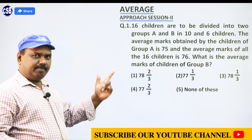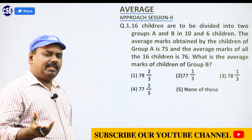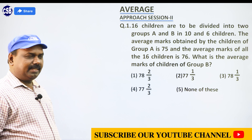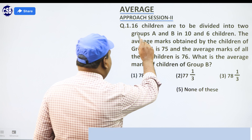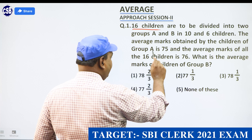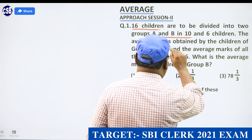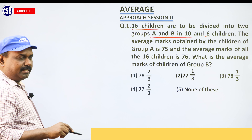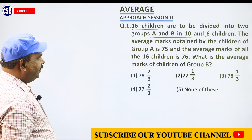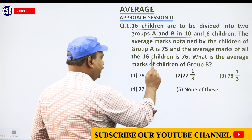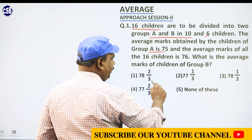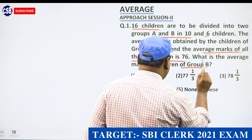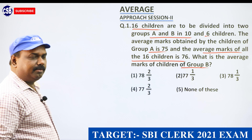So dear student, it is average second problem. So the question: there are 16 children divided into two groups — A group and B group. A group has 10 children, B group has 6. Average mark obtained by group A is 75 and average of all 16 children is 76. What is the average mark of group B?